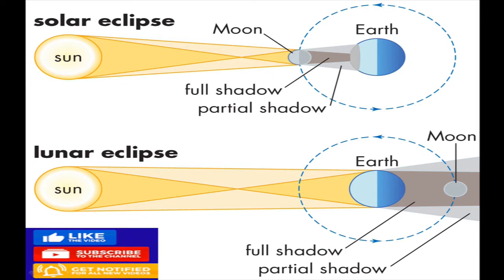A solar eclipse occurs when the moon comes between the sun and the earth. A lunar eclipse occurs when the earth comes between the moon and the sun. A solar eclipse lasts for a few minutes and occurs generally during the new moon phase. A lunar eclipse lasts for a long time and occurs during the full moon phase. A solar eclipse happens once in a year, while a lunar eclipse occurs more than two or three times a year.